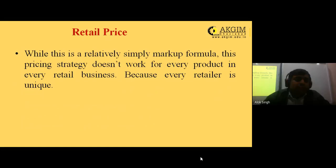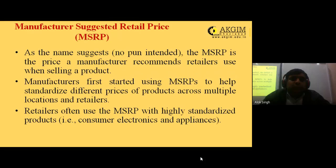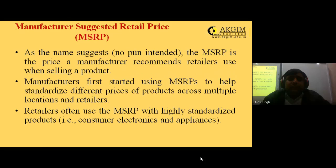While this is a relatively simple markup formula, this pricing strategy does not work for every product in your retail business, because every retailer is unique and you need to decide the price based on different scenarios. Next is the Manufacturer Suggested Retail Price, or MSRP. Sometimes a manufacturer prints a price on the product — that is the MRP, or maximum retail price. For example, Amul might print that the MSP of milk is 45 rupees per liter, meaning you cannot sell it for more than 45 rupees.